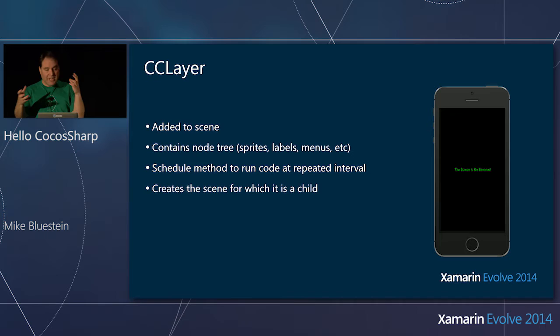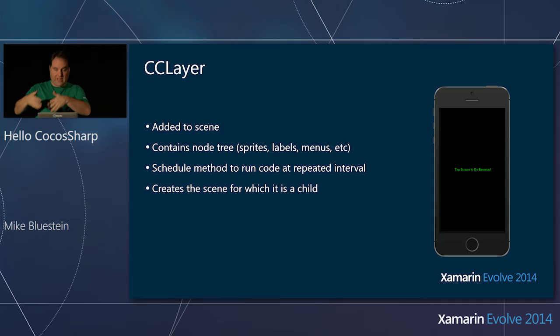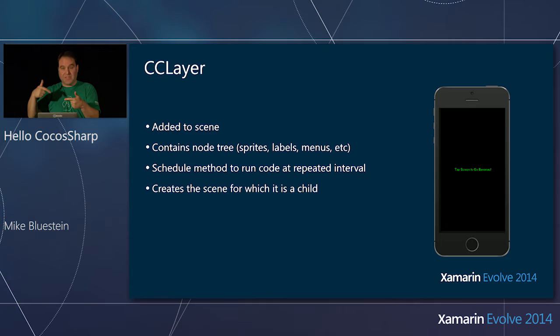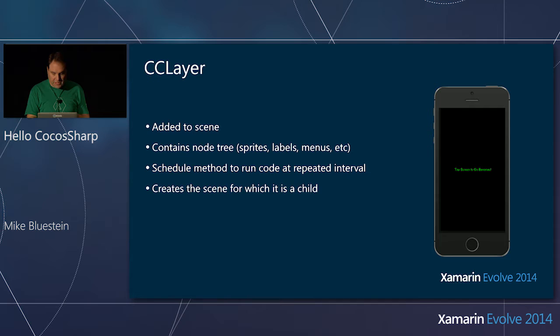When you're creating a layer, you have to get a scene that adds that layer to it. The pattern typically followed in CocosSharp is: the layer — which would be some subclass of CC Layer — has a factory method that gives back a scene. That scene contains the layer. So I'd have a layer subclass and a static factory method that says 'give me back a scene,' and in that method I create the scene and add the layer to it.